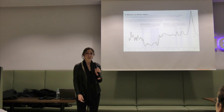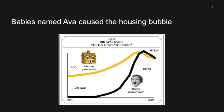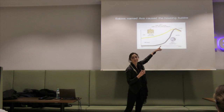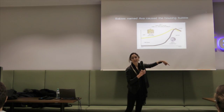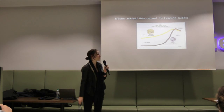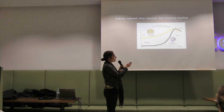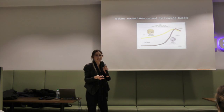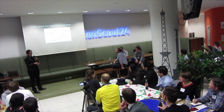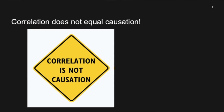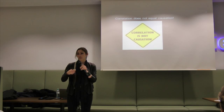Basically, I found it's really hard to deny that the number of babies born named AVA caused the housing crisis. As more were born, the housing price index went up, and then as people stopped naming their kids AVA, housing prices dropped with it. But what you see here is that just because two things move together — just because they're correlated — doesn't mean one causes the other. Correlation does not equal causation.